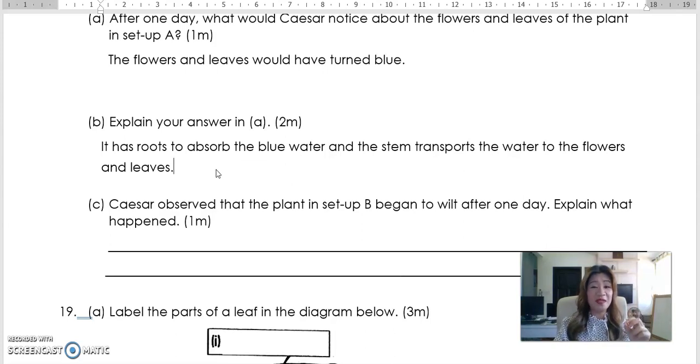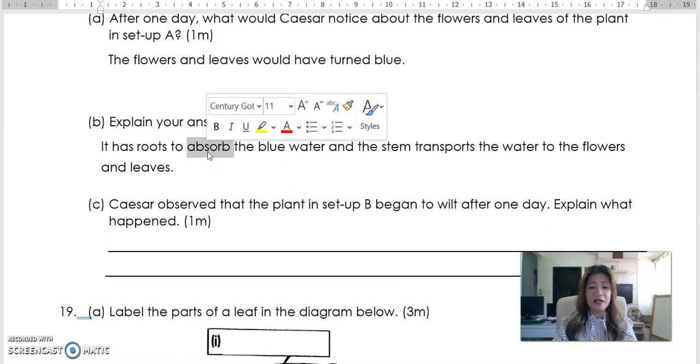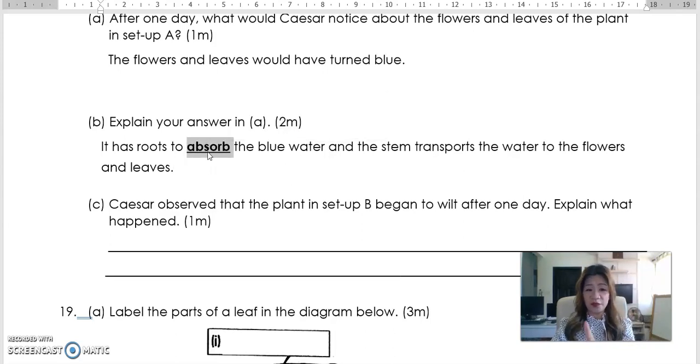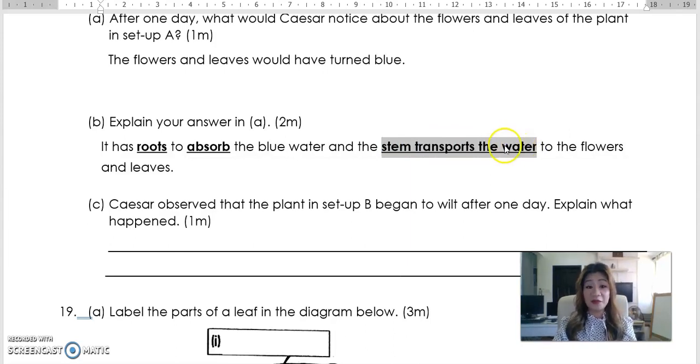So the roots absorb the water. And then how did the flowers and the leaves turn blue? Because it is transported through the stem. If you really want to elaborate some more, just to be sure, you can say the water carrying tube carried the blue water through the stem to the flowers and the leaves, thus turning them blue. That will be a little bit more long-winded, but that can guarantee you surely get the two marks because that's exactly what you learned. Otherwise, the key would be absorbed. So the roots absorb the water. That's one. And then the stem transports the water. That's another one mark over there. That's the keywords.